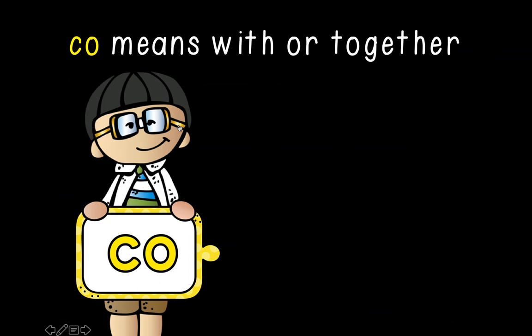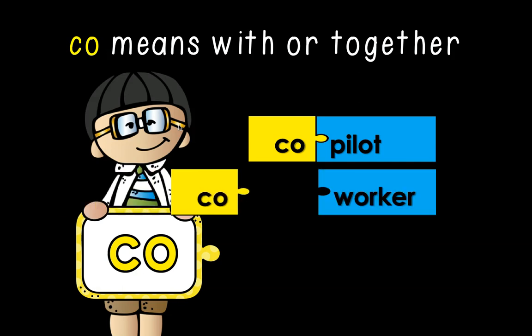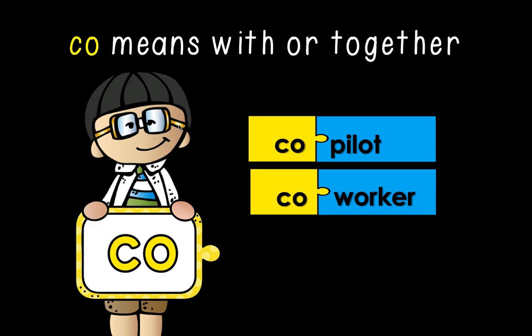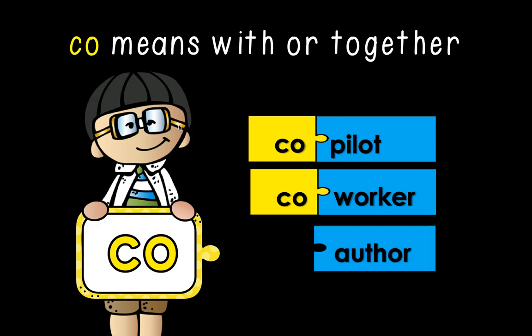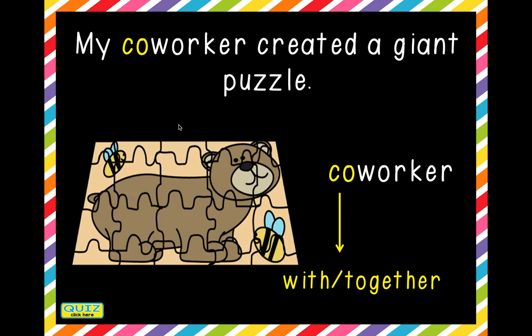Our next prefix is co. Co means with or together. A pilot is alone unless they have a co-pilot who helps them fly the plane — they fly it together. A worker is alone until they have co-workers. They're co-workers because they work with or together with other people. You are alone in writing your book unless you are a co-author, meaning you wrote a book with someone. To cohabitate is to live together. My co-worker created a giant puzzle — co means together, someone they work with.